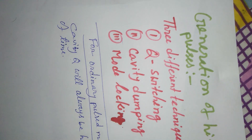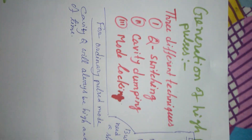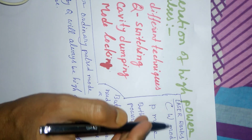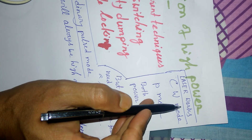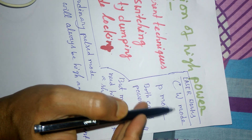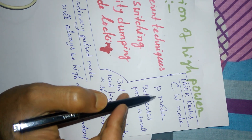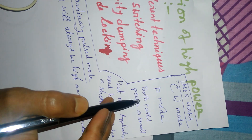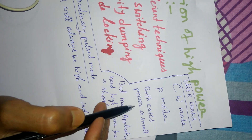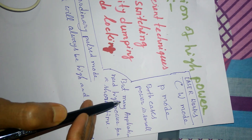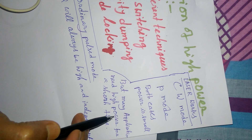Now I am going to discuss the generation of high power pulses. Lasers work in two different modes: continuous wave mode, called CW mode, and pulse mode, called P mode. In both cases, power is very small, but many applications need high power for a short time.